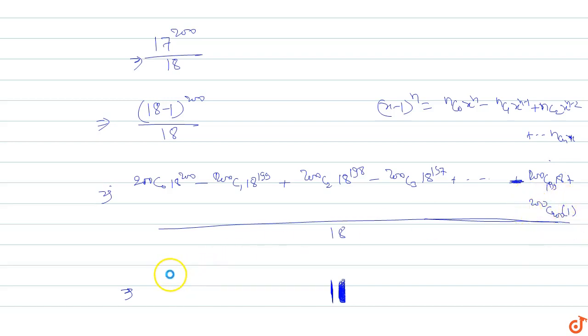So all terms give zero, zero, zero. The only term remaining is 200C200 into one upon 18, which equals one upon 18.